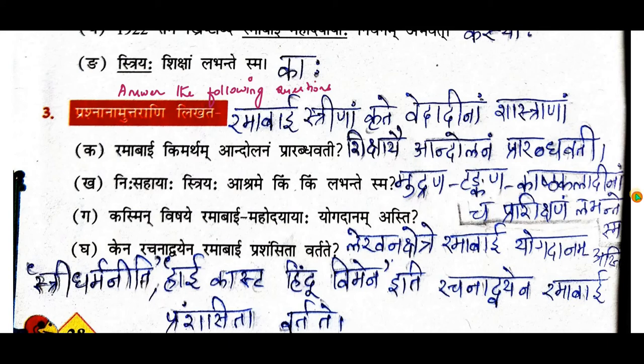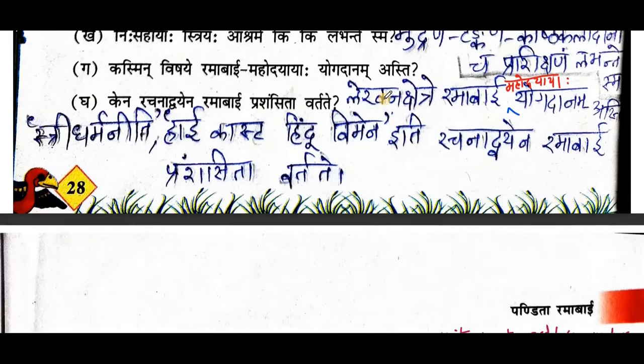They learned typing, printing, and wooden artwork. Answer: nissahayaha striyaha ashrame mudrana tankana kastakaladhinam chaprasikshanam labhantesma. Third question: kasmin vishayi ramabhai mahodayayaha yogadhanam asti — in which field is Ramabhai's contribution? In the writing field — lekana chetre ramabhai mahodayayaha yogadhanam asti. Fourth question: kena rachanadvayayana ramabhai prashamsithavartate — she got famous for two written works: sri dharmani and high caste hindu women.